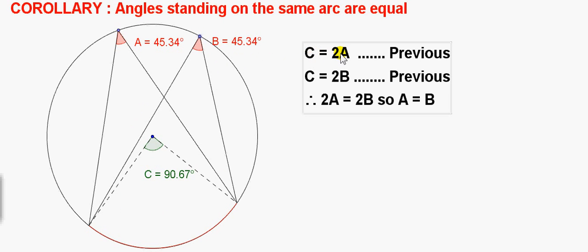So both 2A and 2B are equal to the same thing, namely C. So they must be equal to each other. If 2A equals 2B, then A must equal B. So these two angles are equal to each other, and they're always half of the angle at the centre of the circle.